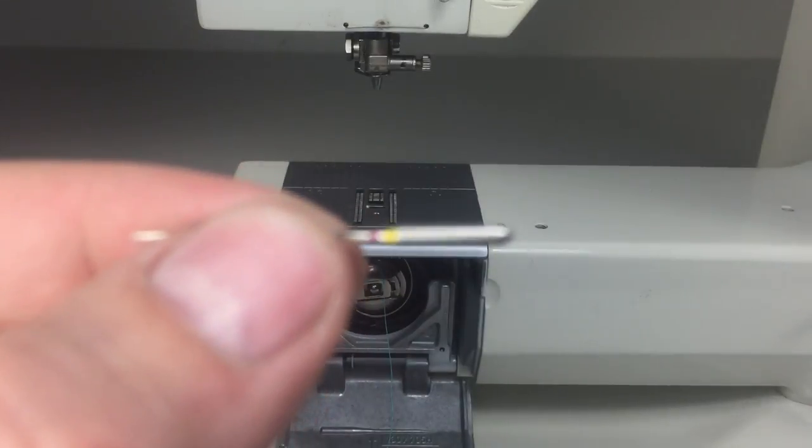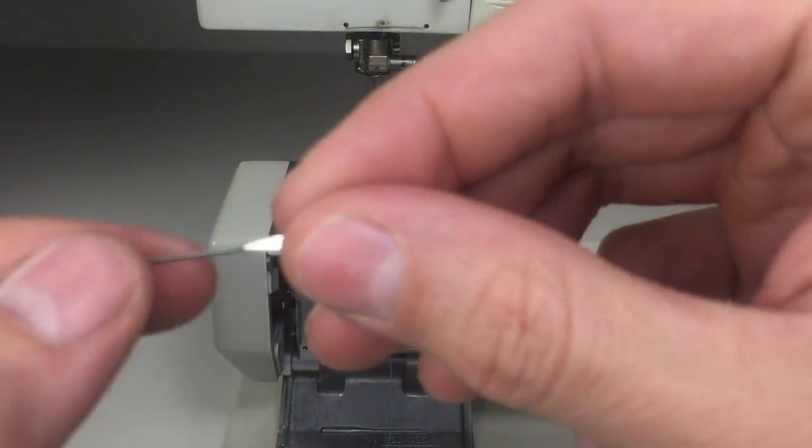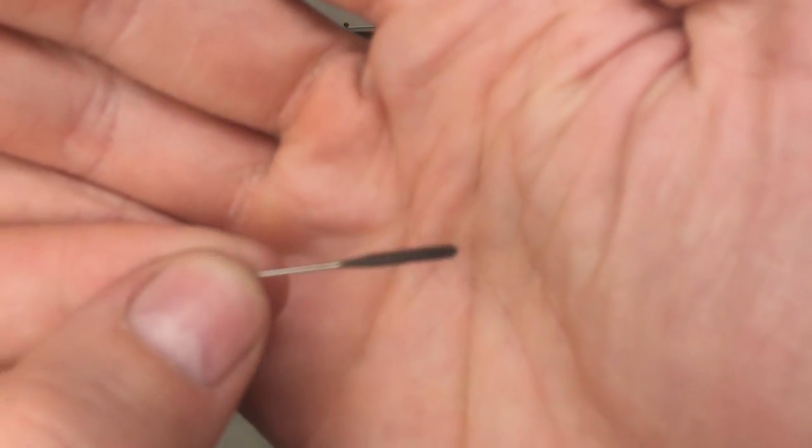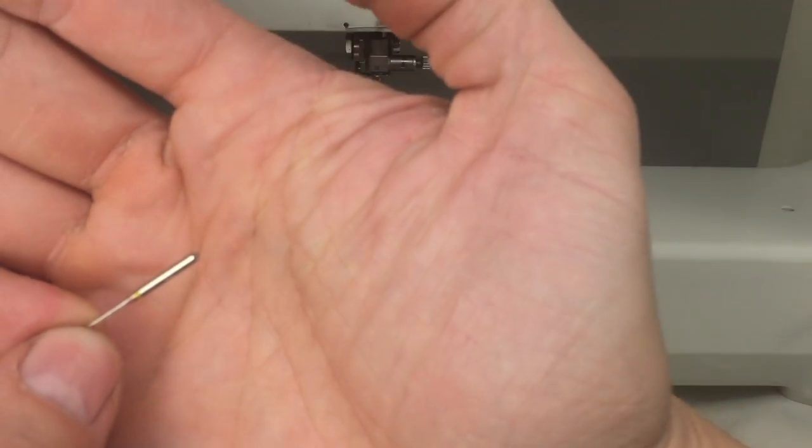It's important to keep in mind that your needles are directional. In most modern sewing machines, the flat side of the needle goes away from you when threading. If your needle is inserted incorrectly, the machine will not sew properly.